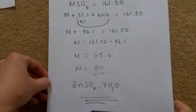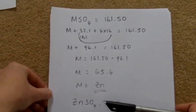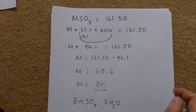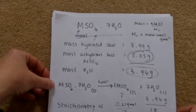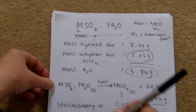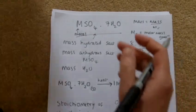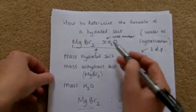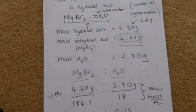So there are two ways to determine the formula of a hydrated salt. Which way you use depends on what you're trying to find. If you are trying to find the metal, use the method with the chemical equation. If you're trying to find the number of waters, use the empirical formula method.